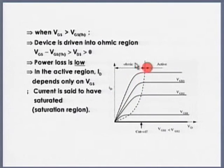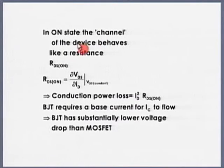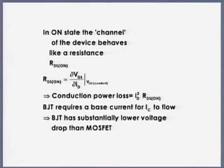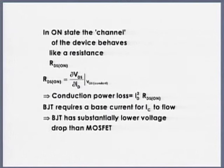Comparing BJT and MOSFET during conduction: on-state losses in a MOSFET are slightly higher because it appears as a purely resistive element (RDS_on), whereas in a BJT the on-state loss is VCE_sat × IC, which is lower. So the output characteristics of a BJT are slightly superior compared to that of a MOSFET.